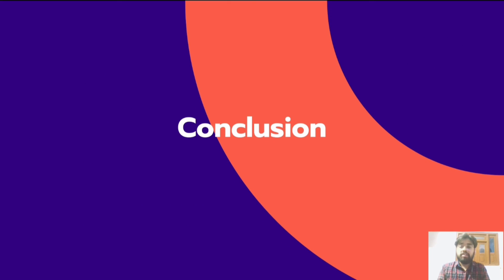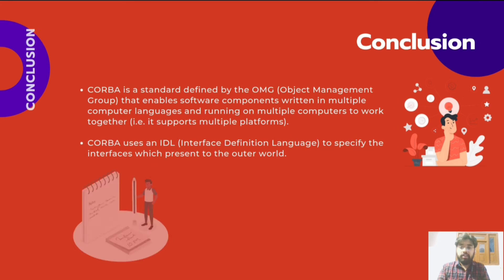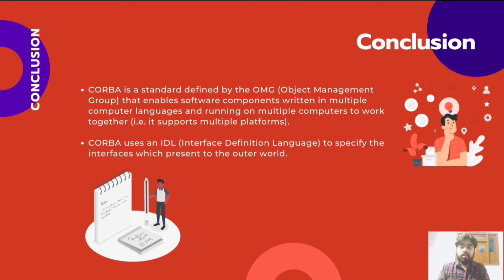So let's summarize all the things we have learned today. CORBA is a standard defined by OMG — Object Management Group — which is an organization containing big MNCs that created the CORBA platform. CORBA enables software components written in multiple computer languages and running on multiple platforms to work together. Everything in CORBA is managed by IDL, which provides a platform for multiple software, programming languages, and data types.